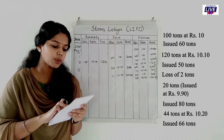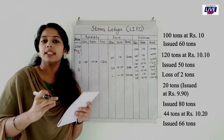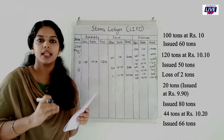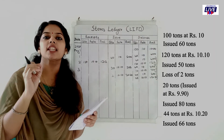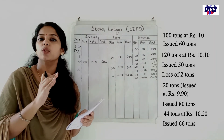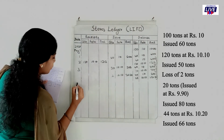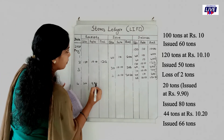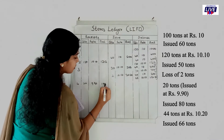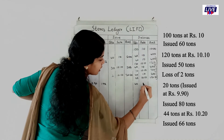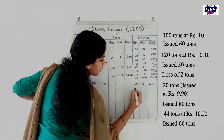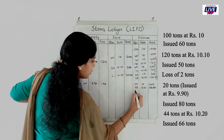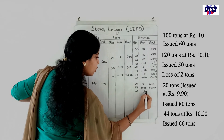Fourth entry — received back 20 tons previously issued at 9 rupees 90 paise, amount 198. Since these were already issued and returned, we record the receipt at 9.90. Balance: 40 tons at 10 rupees (400), 68 tons at 10.10 (686.80), plus 20 tons at 9.90 (198).